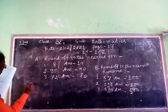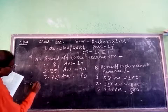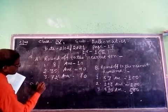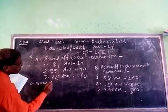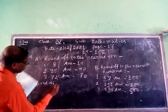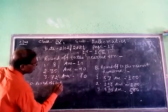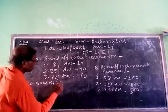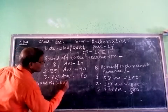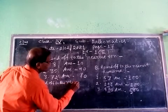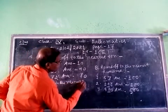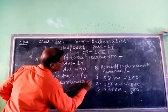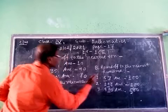C. Round up to the nearest thousand. To the nearest thousand.